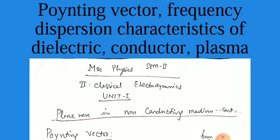Today we will discuss MSc Physics Semester 2nd, and the second paper that is Classical Electrodynamics, and its first unit related to the plane wave in the non-conducting medium. On the last lecture, we discussed the impedance as well as the equations and the velocity of the wave in the non-conducting medium. Today we will continue with the Poynting vector and after that we will discuss the frequency dispersion characteristics of dielectrics, conductors, and plasma.